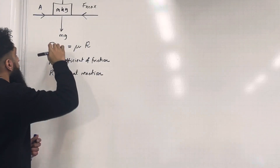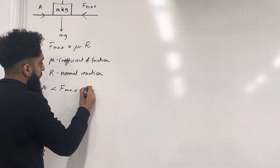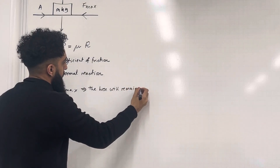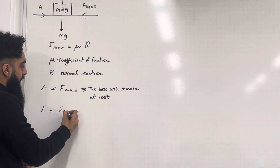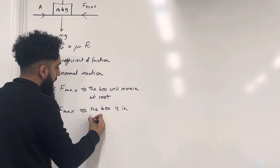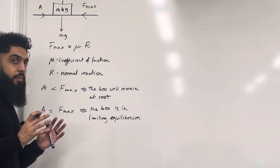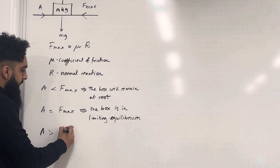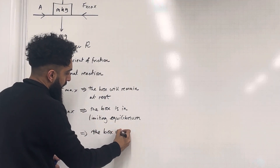Let's look at three different scenarios. Suppose the applied force is less than F max, the maximum friction — this implies that the box will remain at rest. The next scenario: the applied force is equal to the maximum friction, which implies that the box is in limiting equilibrium. If the applied force is greater than F max, this implies that the box will accelerate.